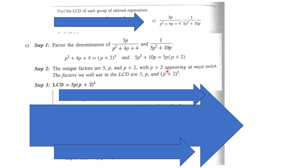With p plus 2 appearing at most twice, the factors we'll use in the LCD are 5, p, and the quantity p plus 2 squared. So the least common denominator is 5p times the quantity p plus 2, whole squared.